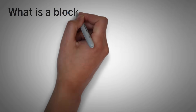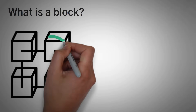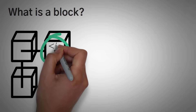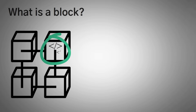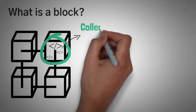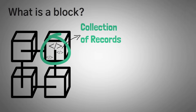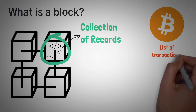What is a block? In terms of cryptocurrency, a block is just a bunch of data. In fact, the data could be almost anything, but usually it's just a collection of records. For the number one crypto, Bitcoin, this data is literally just a list of transactions.